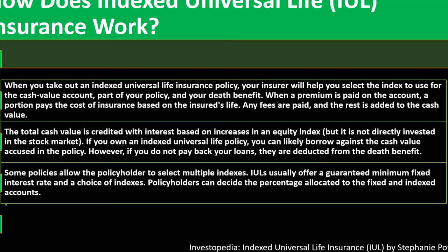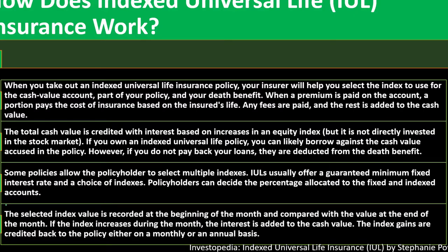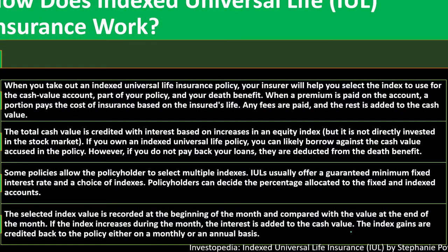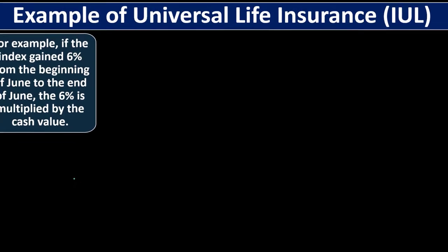However, if you do not pay back your loans they are deducted from the death benefit. Some policies allow the policy holder to select multiple indexes. IULs usually offer a guaranteed minimum fixed interest rate and a choice of indexes. Policy holders can decide the percentage allocated to the fixed and indexed accounts. The selected index value is recorded at the beginning of the month and compared with the value at the end of the month. If the index increases during the month, the interest is added to the cash value. They are pegging it to the index but your funds within the insurance policy are not actually invested in the market. They are using a system to peg the returns to the fluctuations in the market.